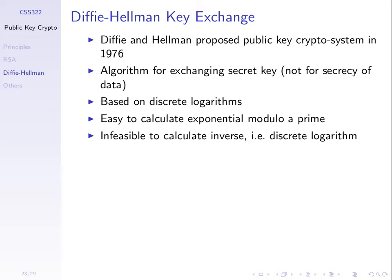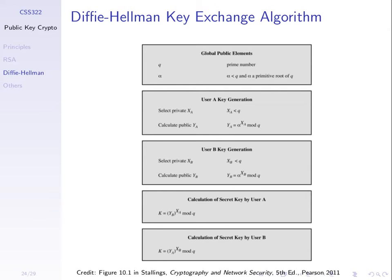Recall that the Diffie-Hellman key exchange is a public key cryptographic algorithm. There are some public values, and we can think of a public and private key. The algorithm specifies we select a private x and calculate our public y. So x is part of our private key, and y is part of our public key.